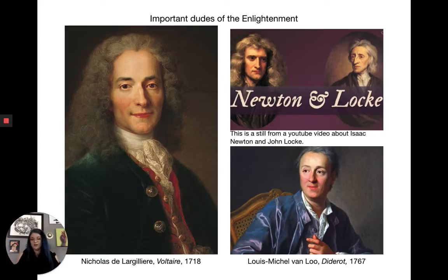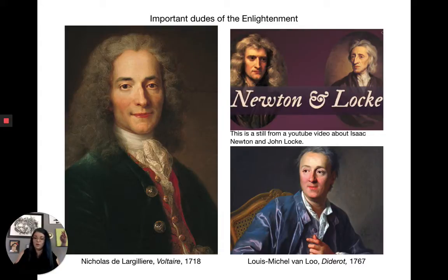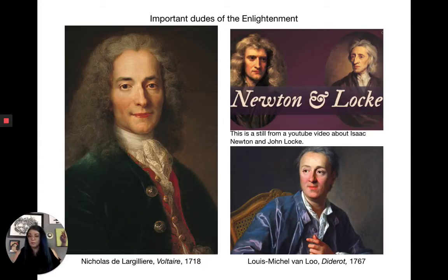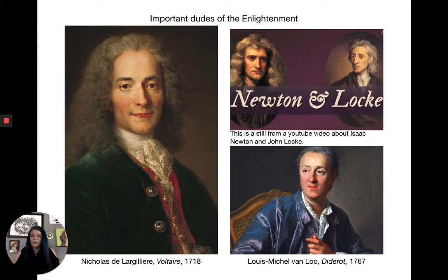Alongside Newton, his contemporary John Locke also believed in empirical studies and translated this into social issues. He wrote the doctrine of empiricism, which says knowledge comes from sensory perception. He believed the laws of nature grant humans rights — specifically the right to life, liberty, and property. That sounds familiar to us as Americans. John Locke was unbelievably instrumental in the thoughts of our founding fathers.